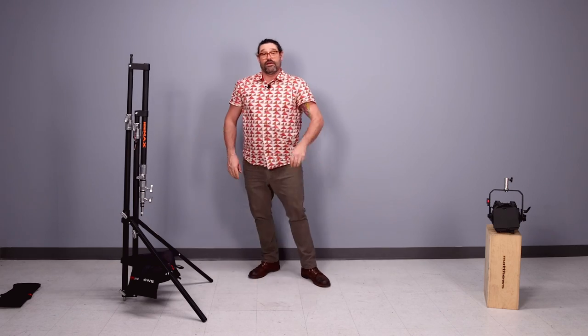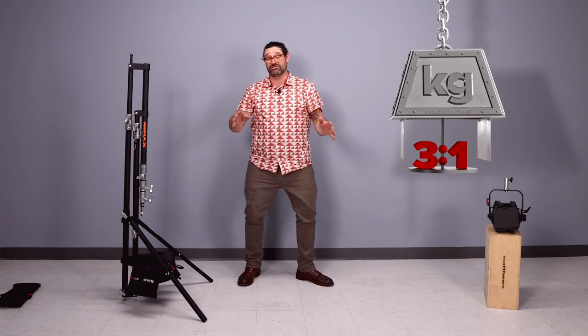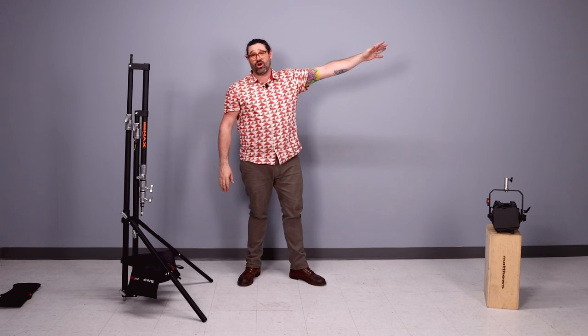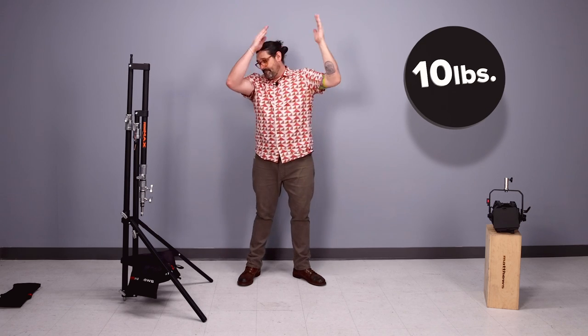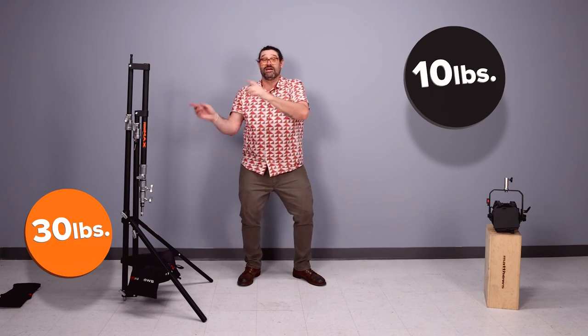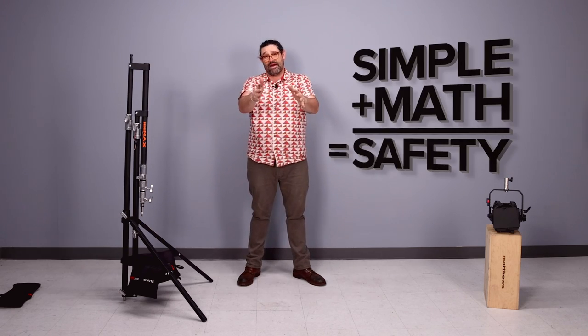We recommend a three to one weight ratio. So whatever you're going to have at the end of your arm, you want three times that weight on your base. 10 pounds on the end of your arm, 30 pounds on the base. 20 pounds at the end of your arm, 60 pounds on the base. Simple math to keep it safe.